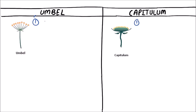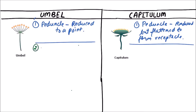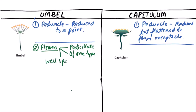First is umbel. In umbel, the peduncle is reduced to a point, while in capitulum the peduncle is reduced but flattened to form a receptacle. In umbel, the flowers are pedicellate, of one type, and well spaced.